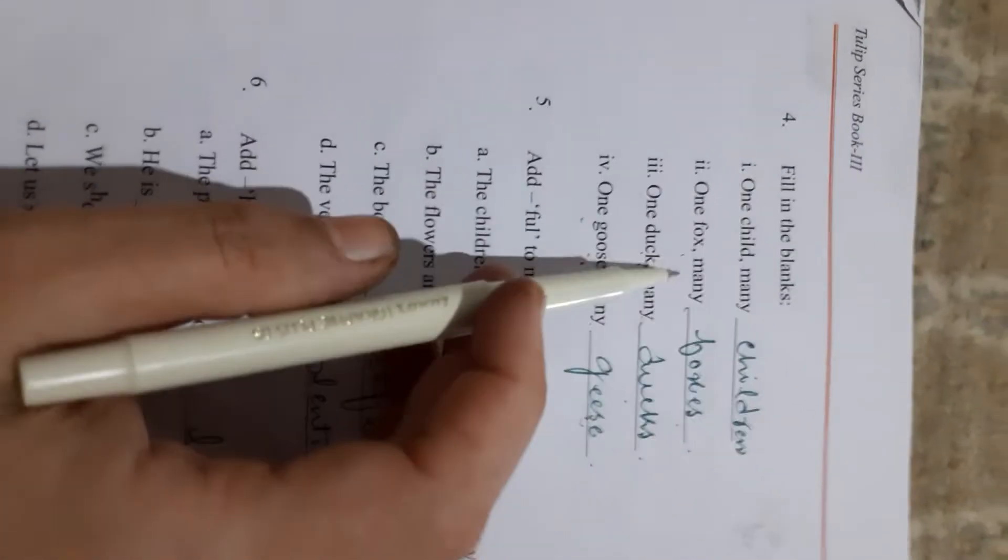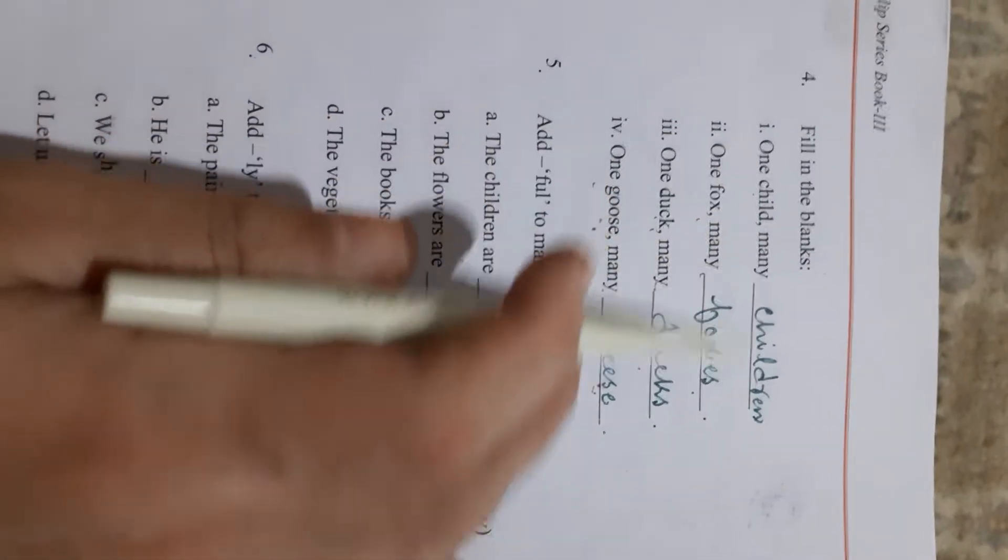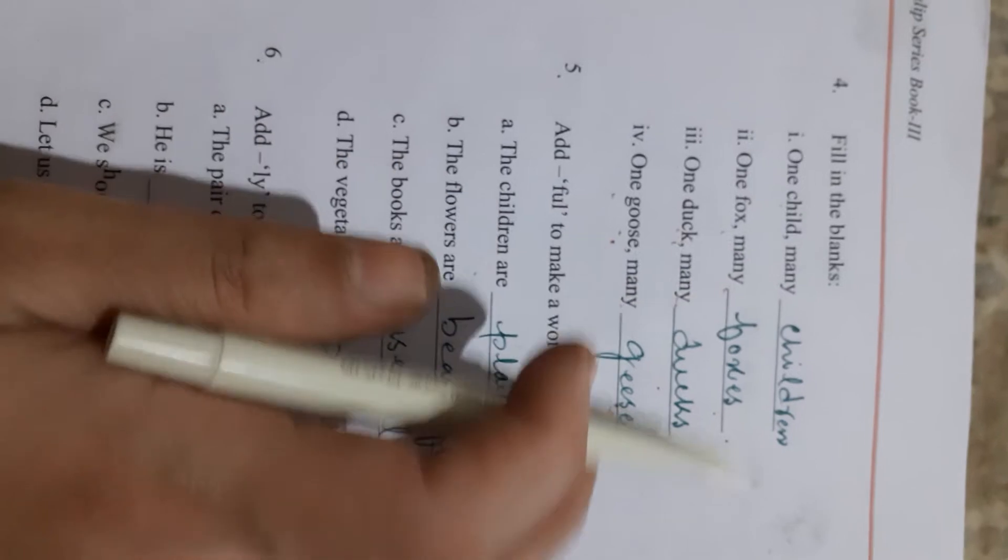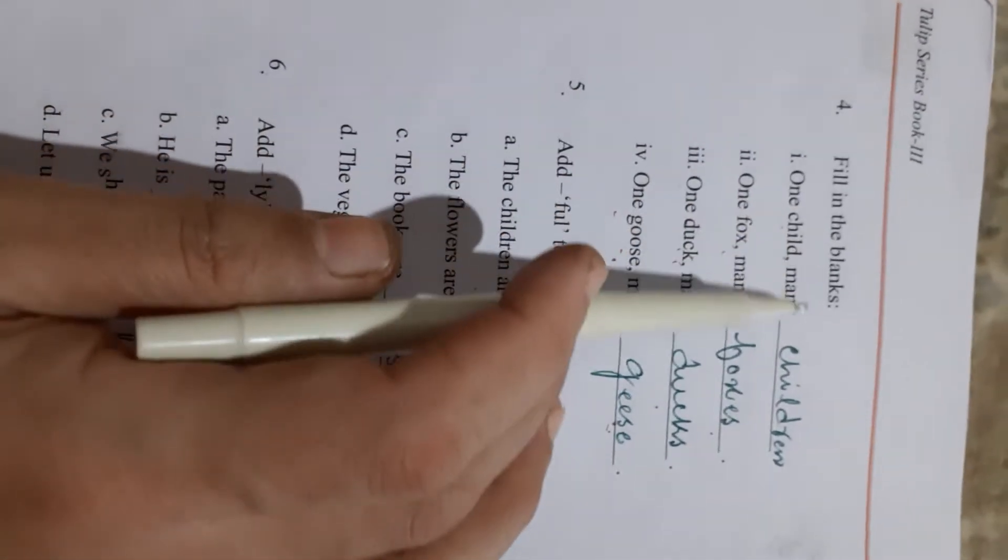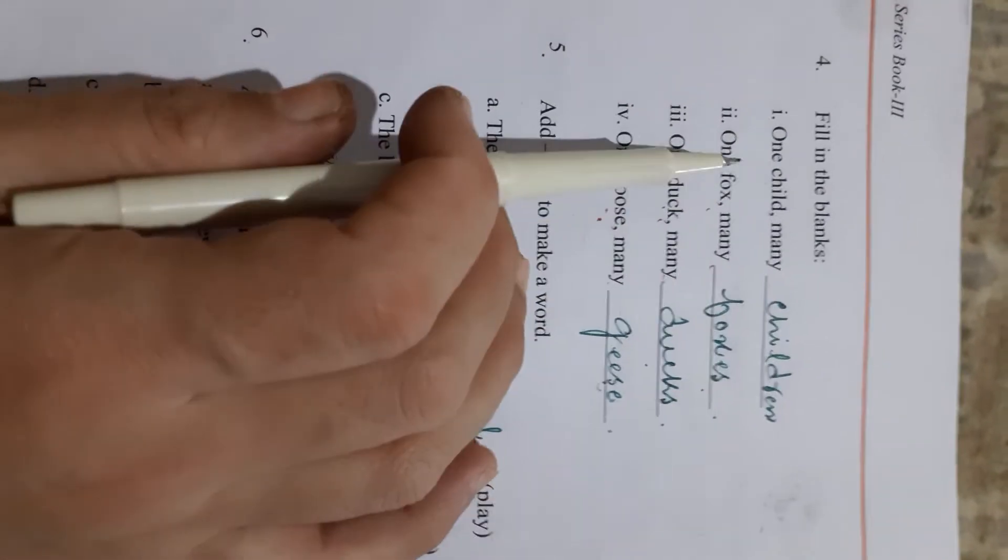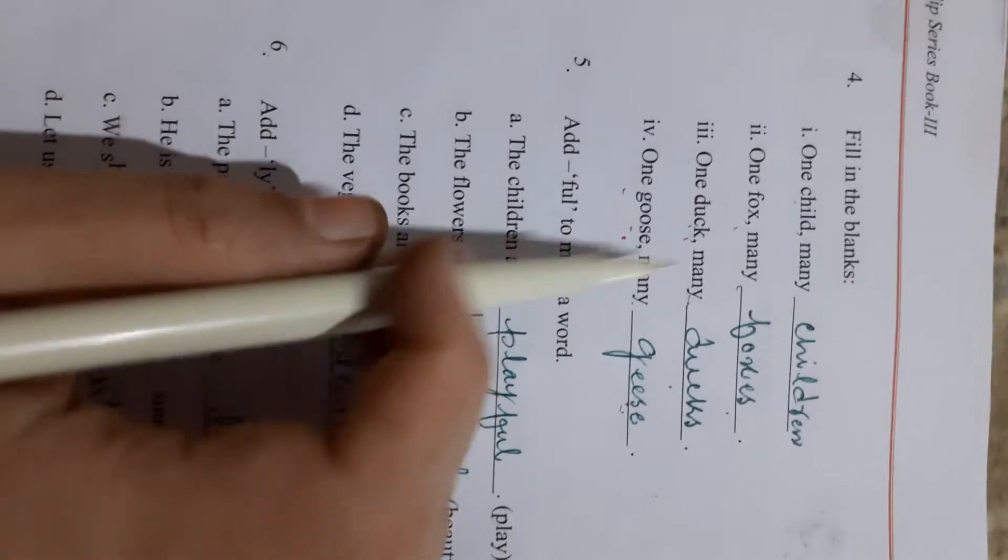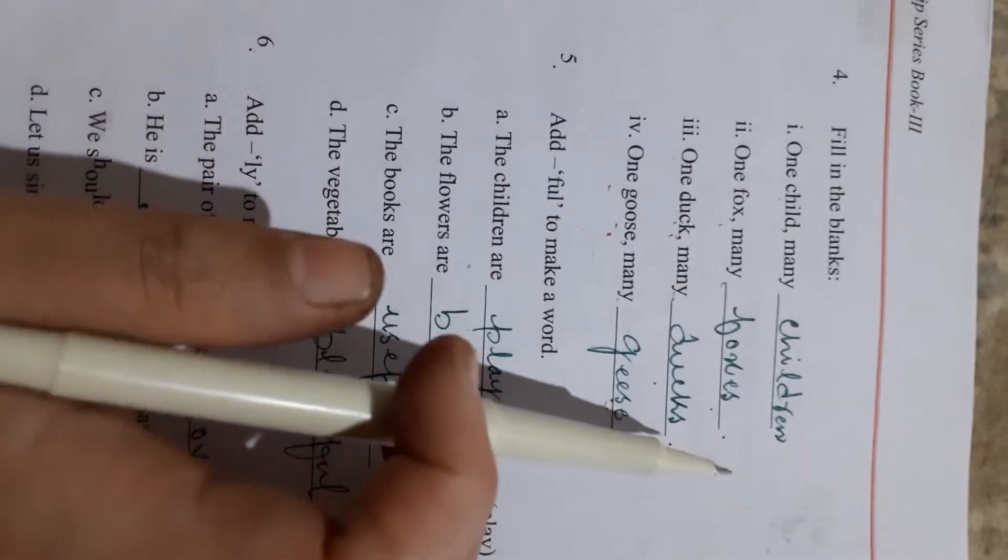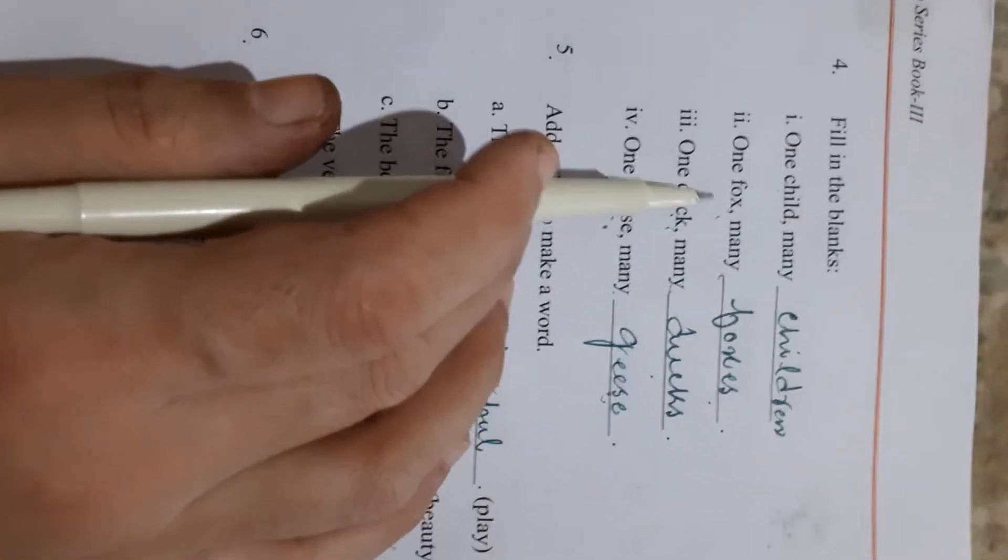Assalamu alaykum students, hope you are fine. We are going to exercise third, exercise fourth part: fill in the blanks. One child singular, plural. Singular means one. One child, many children. One fox, many foxes. One duck, many...